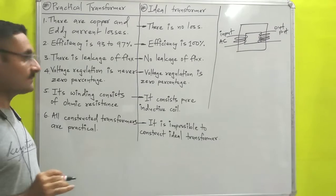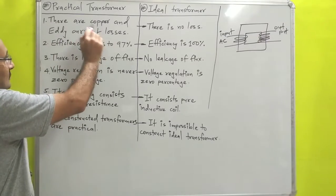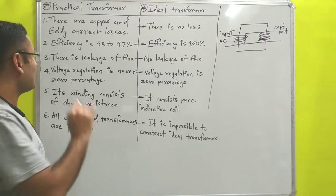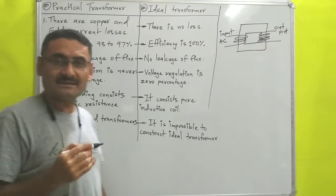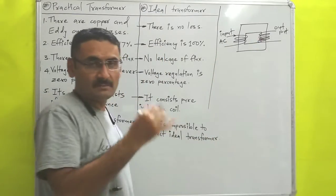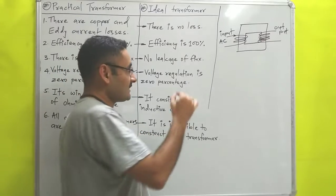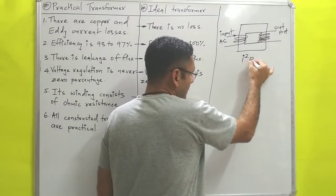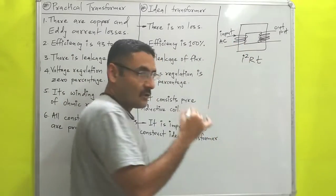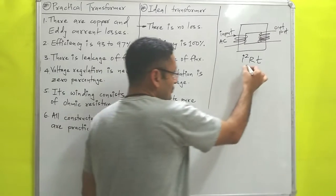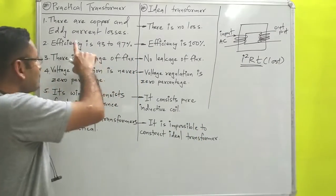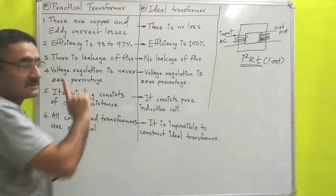The first difference is that there are copper and eddy current losses in a practical transformer. Copper loss means: when we supply current through the primary winding, according to I²R, loss is produced in this coil in the form of heat, so that much energy is lost — that is known as copper loss.